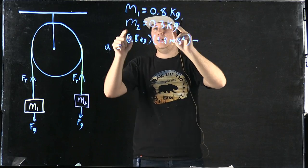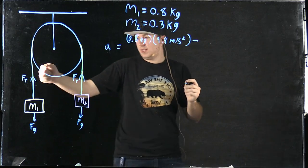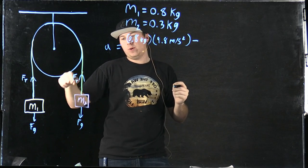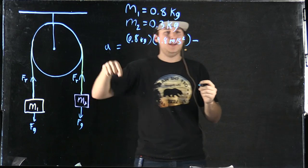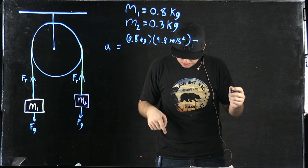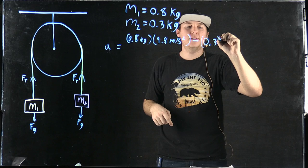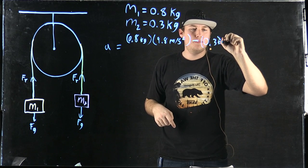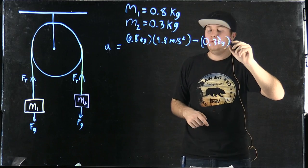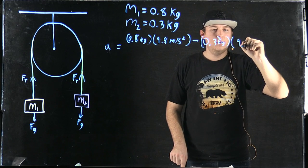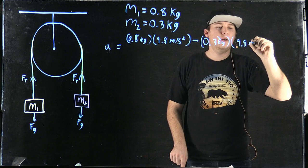and we subtract M2 because that's affecting how fast M1 accelerates downward, since there's a weight opposing it. So we subtract the mass of the smaller mass times the acceleration due to gravity